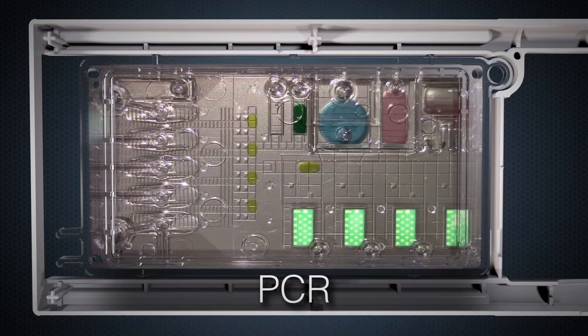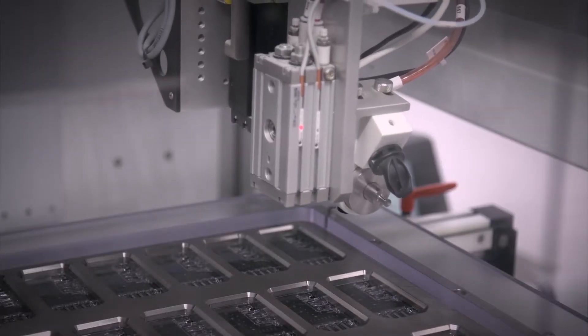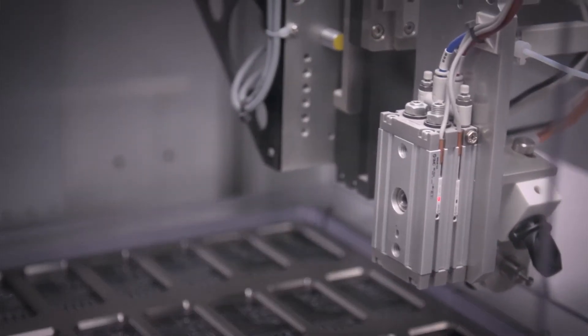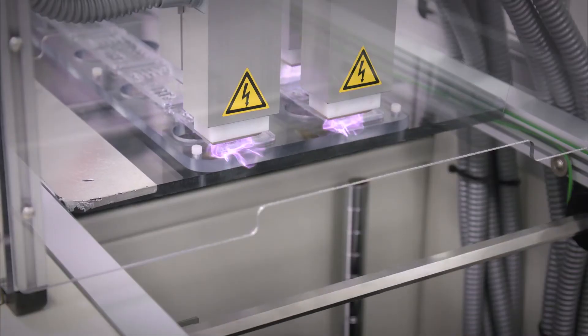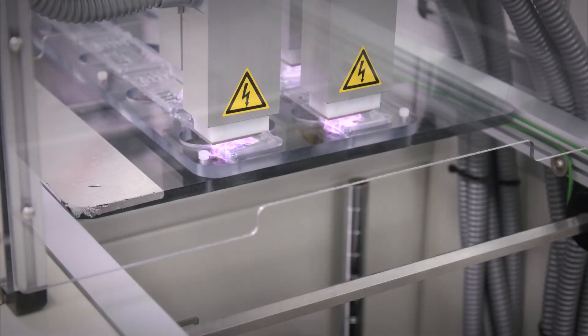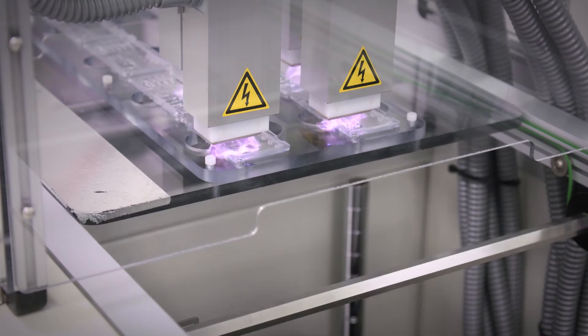To enable electrowetting, certain components of the ePlex cartridge are precisely coated with special materials. The equipment you see here is specially designed to thoroughly clean and prepare these components, to coat them with the required materials, and to ensure the materials are properly set and cured. These process steps are a key aspect of the unique amplification and detection steps of ePlex's sample-to-answer processing capability.